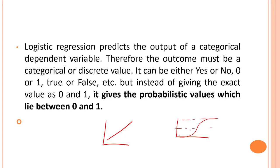This threshold function predicts two maximum values: zeros or ones. The curve from the logistic function indicates the likelihood of something, such as whether the cells are cancerous or not, or whether this email is spam or not spam.